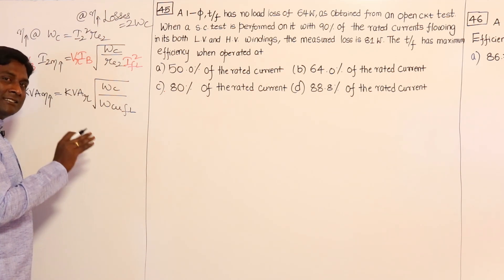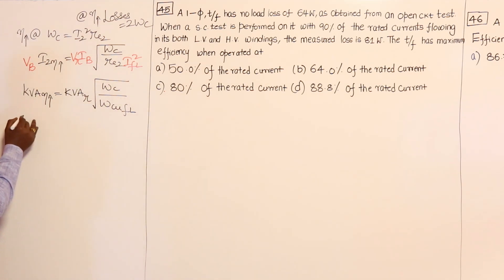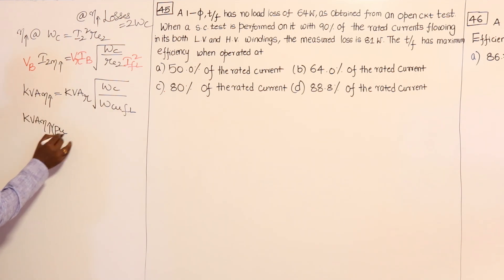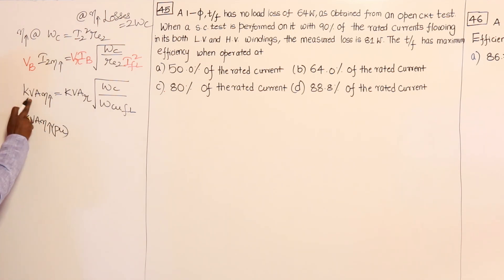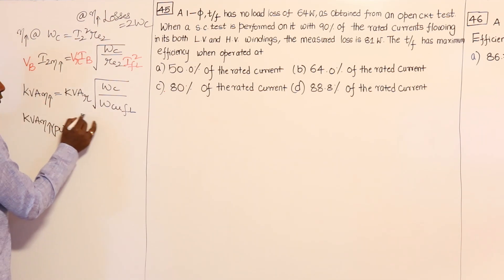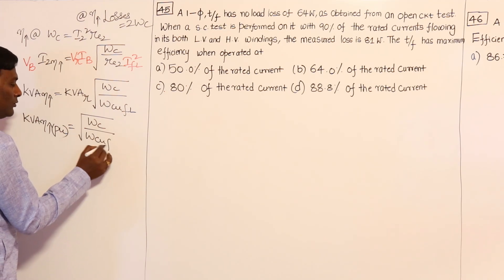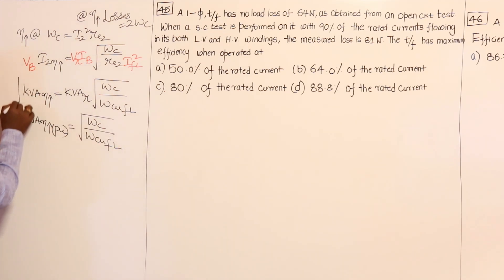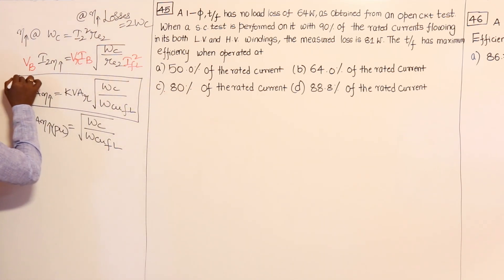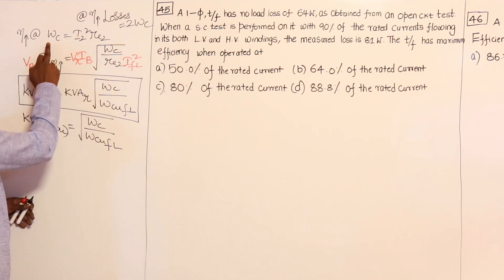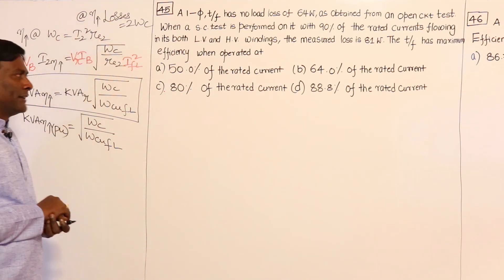We will have to check whether the SC test was conducted at full load conditions or not. KVA at which max efficiency occurs divided by KVA rated gives the per-unit value: it equals the square root of (core loss divided by full load copper loss). This equation has to be remembered — even if you forget it in an exam, from the derivation it is just one step ahead.